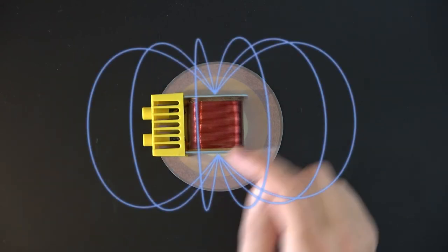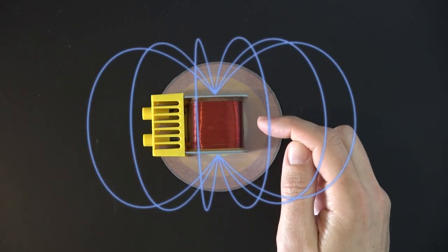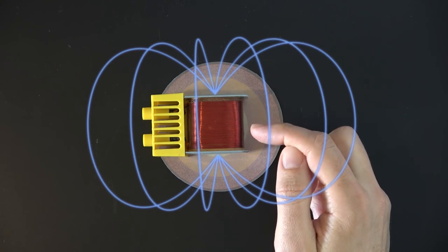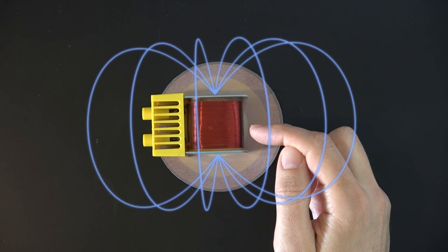There, too, electrons move, which create a magnetic field. It has also something to do with the rotation of the Earth and the currents that result from it.